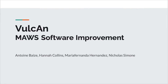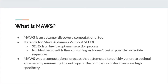Today we will be discussing the EC552 project where we attempted to conduct Moz software improvements. Moz is an aptamer discovery computational tool. It stands for Making Aptamers Without SELEX, and SELEX is an in vitro aptamer selection process that has its downfalls — it is very time consuming and doesn't test all possible nucleotide sequences. Moz was a computational process that attempted to quickly generate optimal aptamers by minimizing the entropy of the complex in order to ensure high specificity.